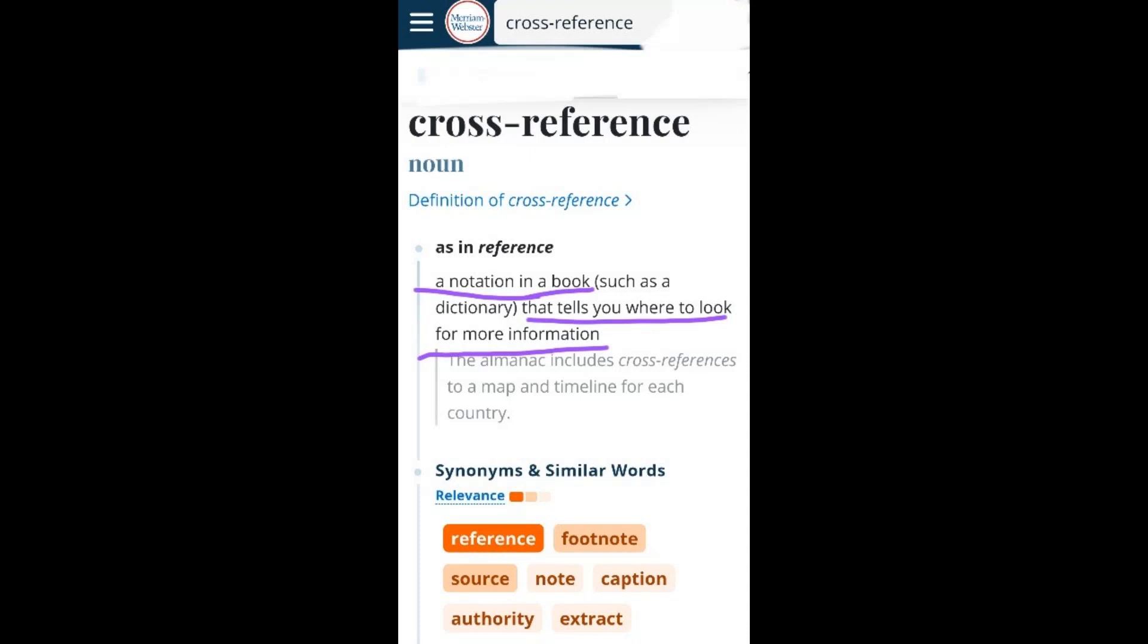Jai Shriram, a cross reference is a notation in a book that tells you where to look for more information.